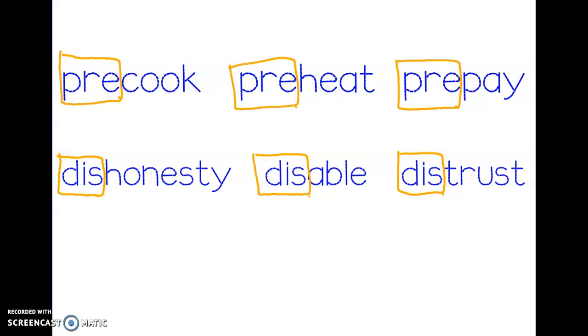Dishonesty, if we take off the prefix we have the root word honesty. Disable, if we take off the prefix we have the root word able. Distrust, if we take off the prefix we hear the word trust. Good. Now let's make sure that we code the rest of the word. Let's look at pre-cook first. We have our obvious coding so we need a K back on the C. Then I see a digraph.